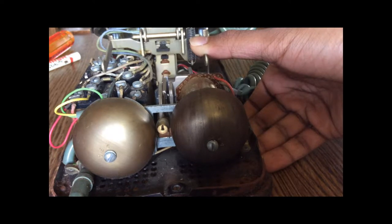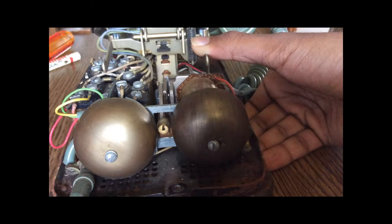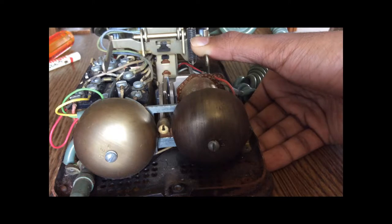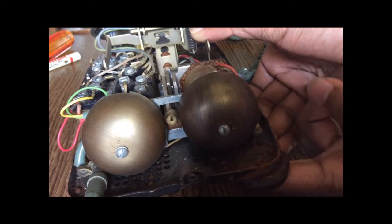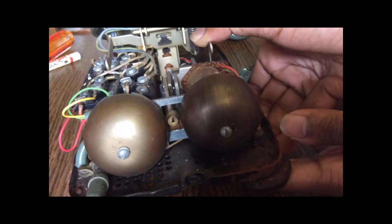So right now the ringer is in its lowest volume setting. To change the ringer on a traditional telephone such as this one, you actually move one of the bells here. So I'm going to slowly increase the volume using a knob or a wheel on the bottom here.